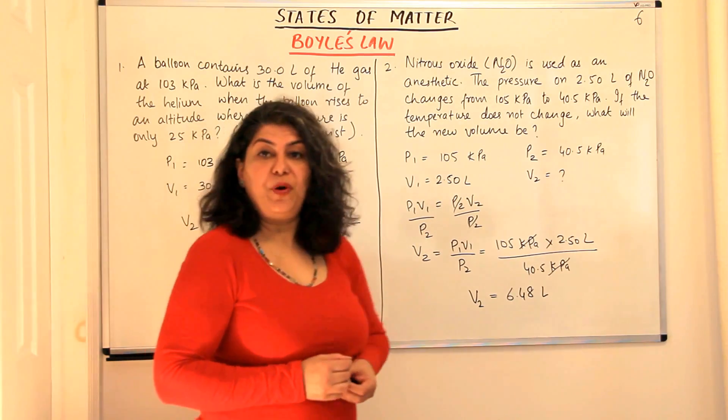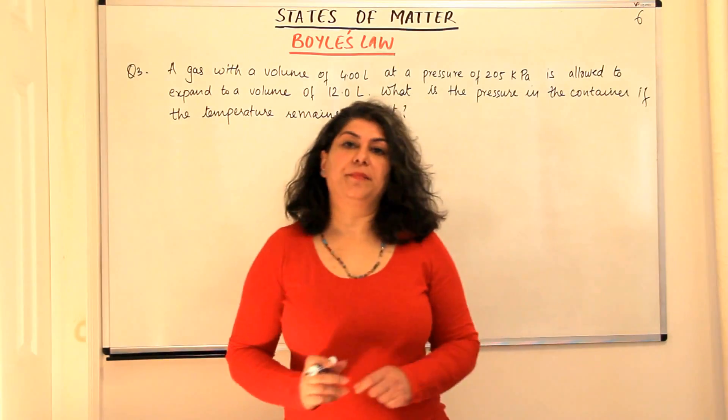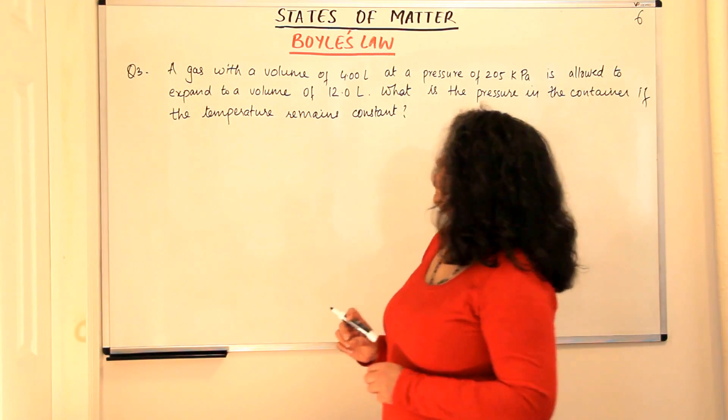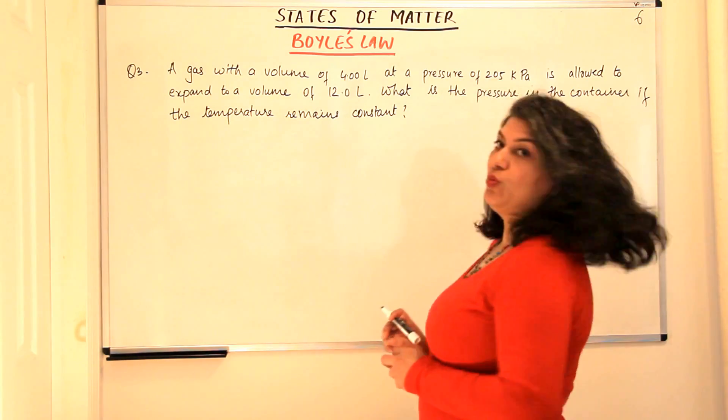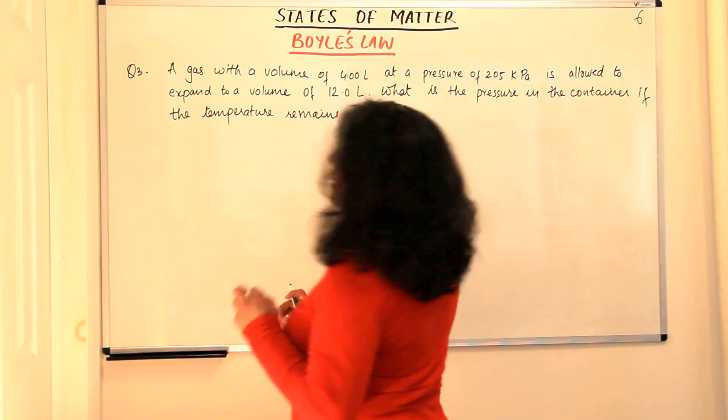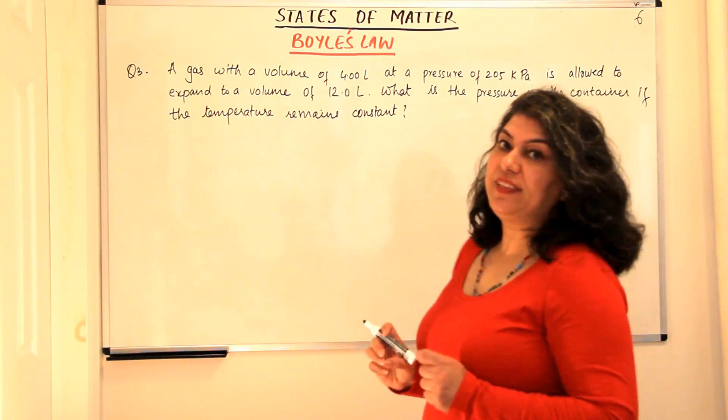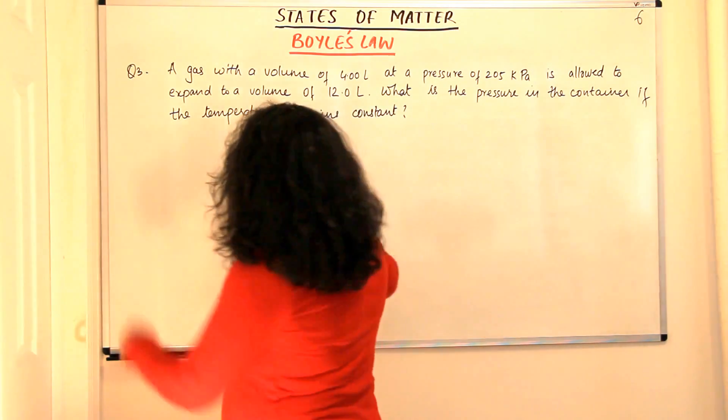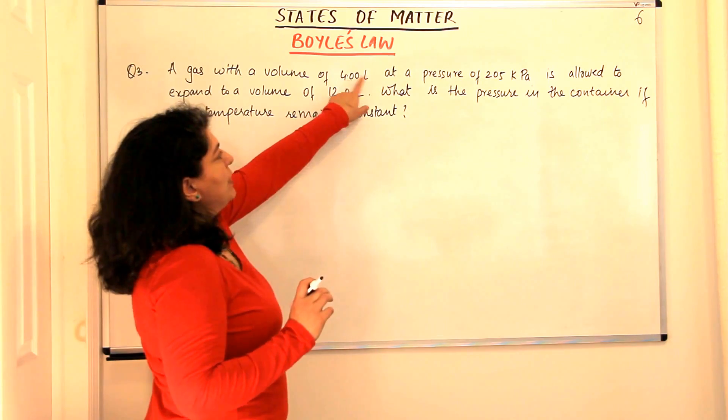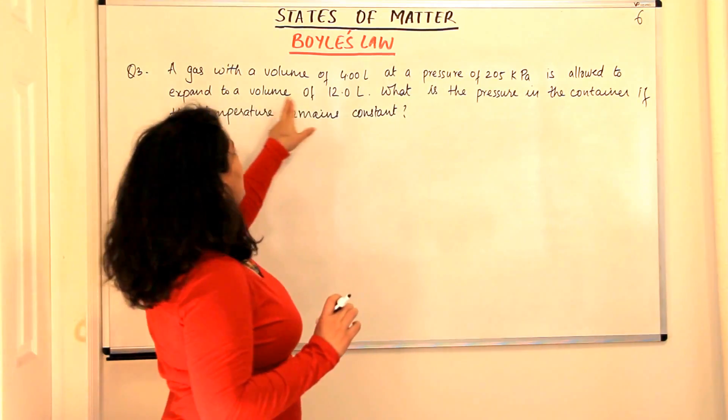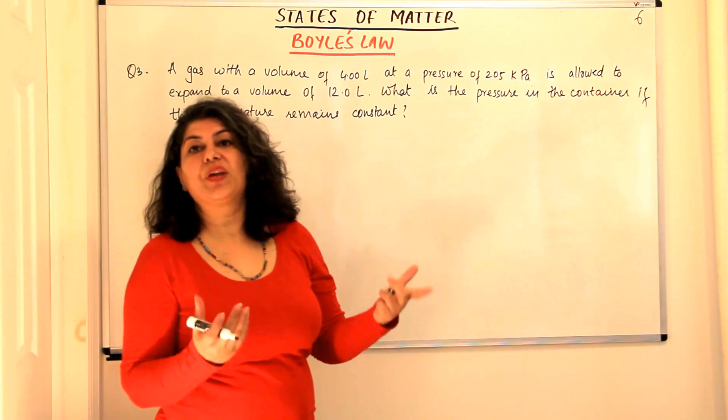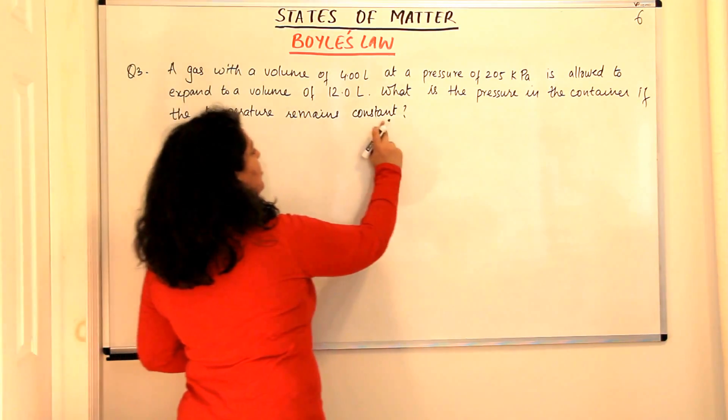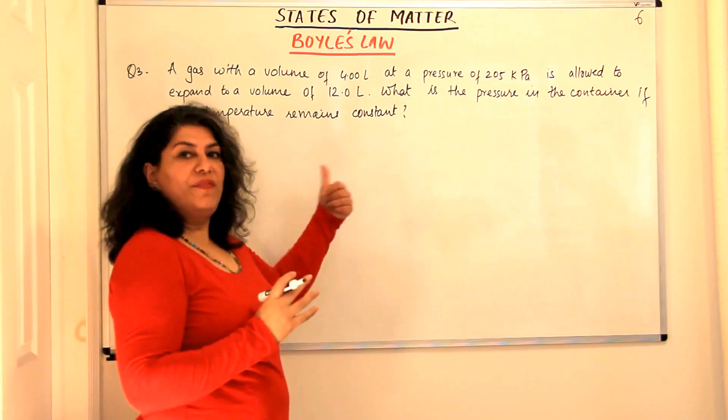Let us now do one more problem and that would be the last problem on Boyle's Law. The question is, a gas with a volume of 4 litres at a pressure of 205 kilopascals is allowed to expand to a volume of 12 litres. What is the pressure in the container if the temperature remains constant? V1 is given to us, P1 is given to us. It is allowed to expand, that is V2 is given to us and P2 is required. Let us assign the values P1, V1 and since temperature is constant and there is a fixed quantity of the gas, we are using Boyle's Law.